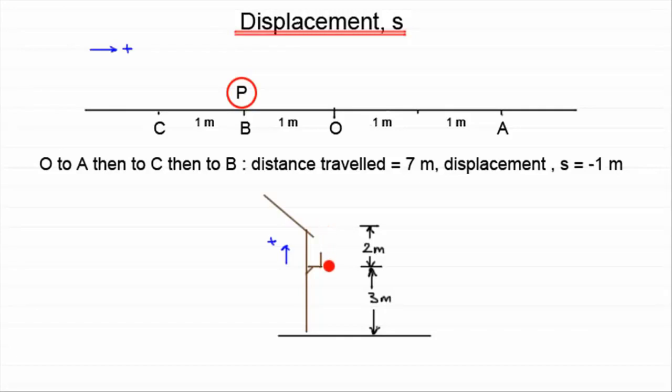Then it comes back down. It's now travelled a distance of 4 meters, but the displacement is 0. And as it comes down towards the ground, when it hits the ground, the displacement is minus 3, yet it's travelled 7 meters.